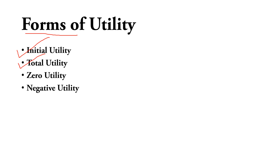The next form is zero utility. For example, suppose at a wedding your stomach is already full, but a friend comes and asks you to accompany him for lunch. Because he is your friend, you go with him and eat something to keep him company. But since your stomach is already full, that food will not give you any satisfaction. That is called zero utility.